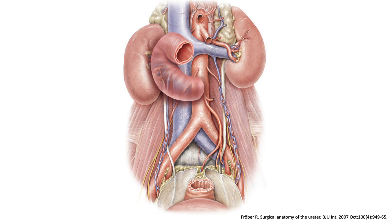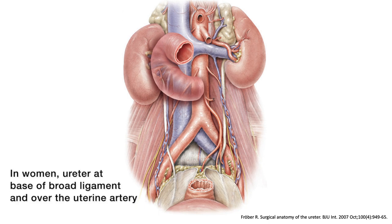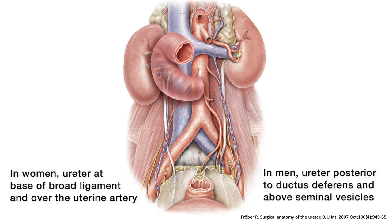The pelvic ureter begins after it passes anterior to the internal iliac artery and travels along the pelvic sidewall. In the female pelvis, this follows a medial direction at the base of the broad ligament and over the uterine artery, entering obliquely into the urinary bladder. In the male pelvis, the ureter travels medially, posterior to the ductus deferens, above the seminal vesicles before entering the urinary bladder.